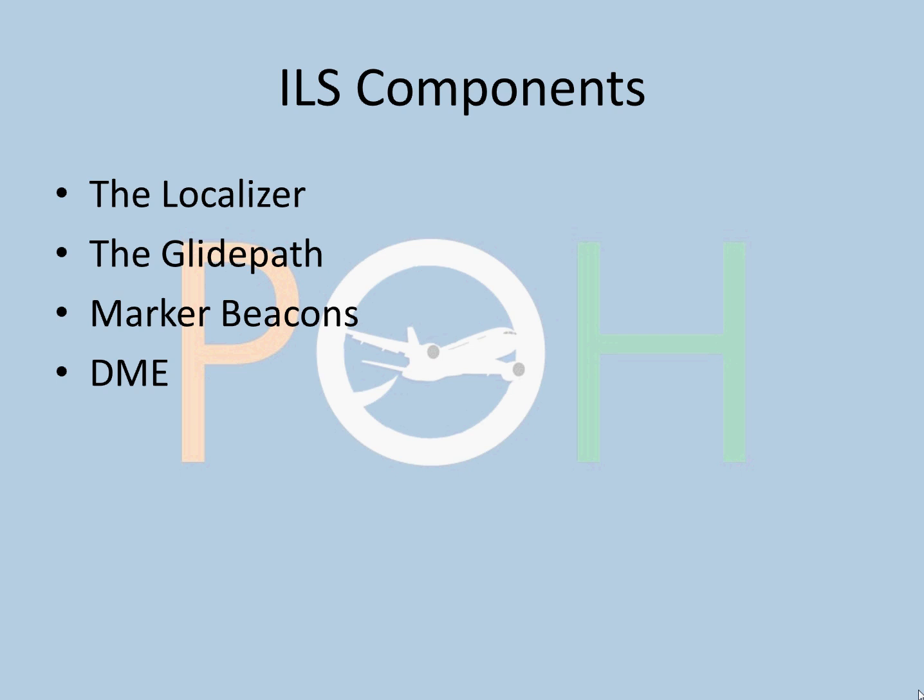ILS has the following components: localizer, glide path, marker beacons, and DME. We shall discuss all of them.